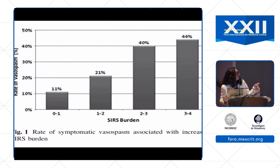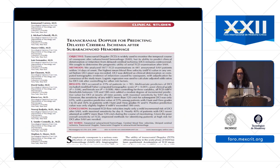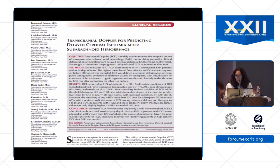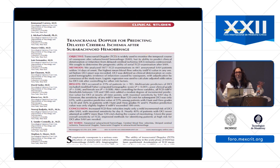The higher the SIRS burden, the higher the rate of vasospasm — up to 44% — and the poorer the outcome. The terminology 'vasospasm' is somewhat archaic; we now prefer 'delayed cerebral ischemia' (DCI), which encompasses vasospasm as well as declining neurological status and strokes seen on imaging. DCI is the broader term used to describe vasospasm.